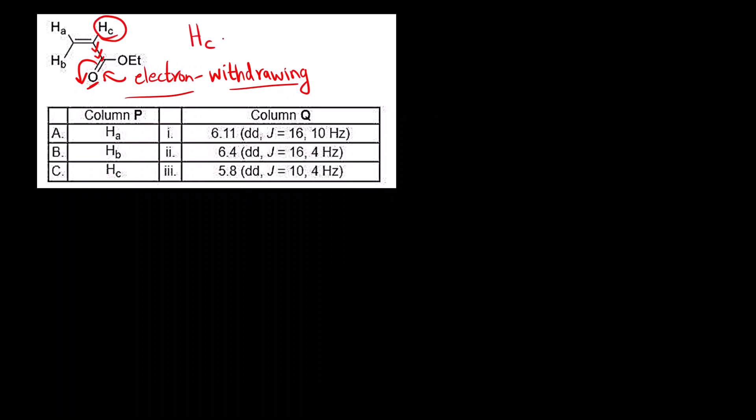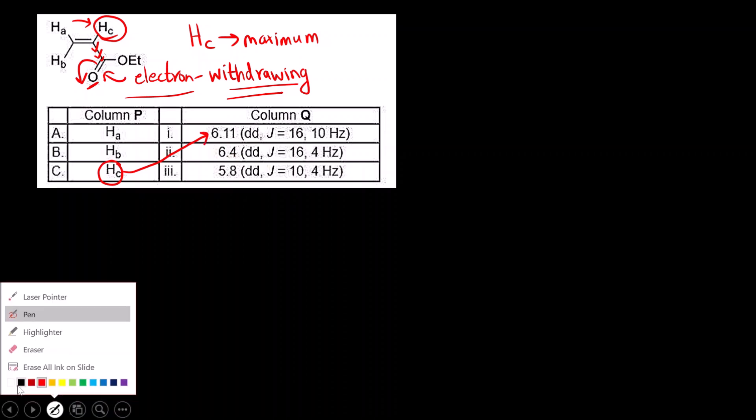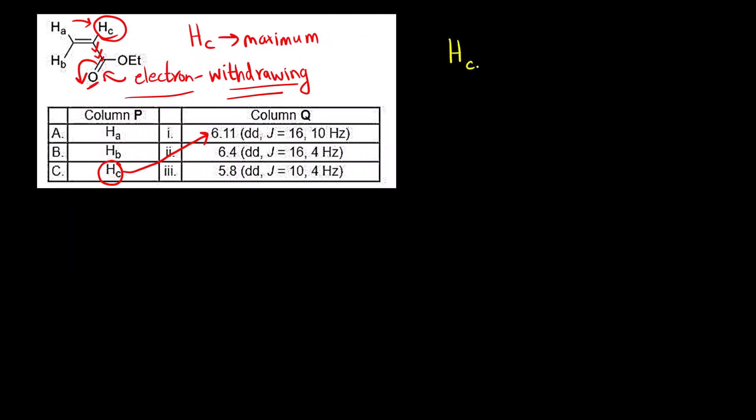So, the chemical shift value of H_C will be maximum because it is closest to the electron withdrawing group. It will withdraw the electron density around H_C and hence the external magnetic field experienced by H_C will be maximum. So the chemical shift value for H_C will be maximum. Now, which is the maximum value? 6.11, 6.4 and 5.8. 6.11 is maximum. So we have got partial answer. H_C should be 1.